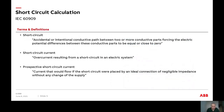In IEC 60909, the term and definition for short circuit current is as follows: a short circuit is when two conductors carrying current touch each other, or when the impedance across these two conductors is close to zero. When that happens, that is basically a short circuit, and under this condition the current that flows is the short circuit current.